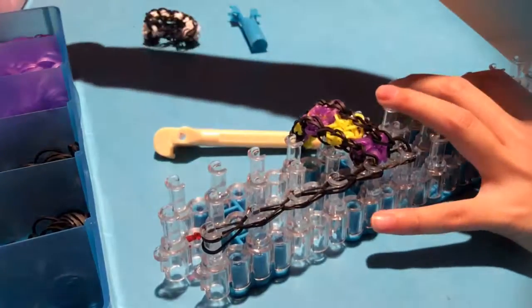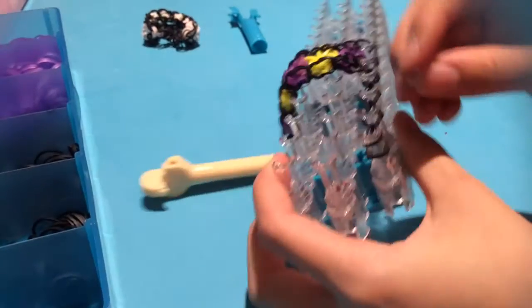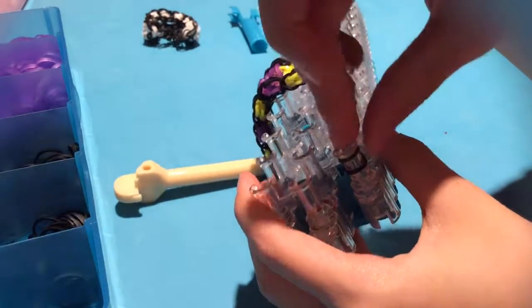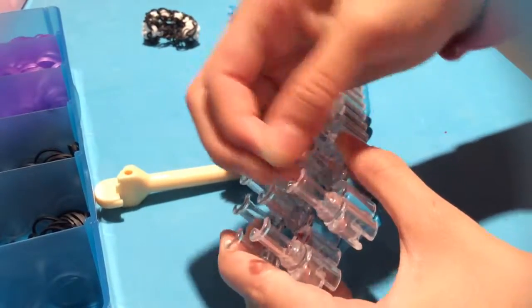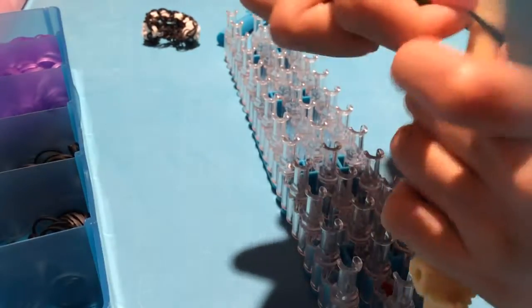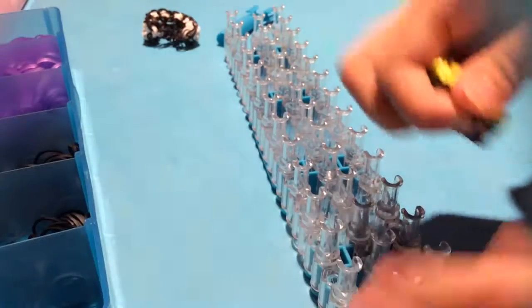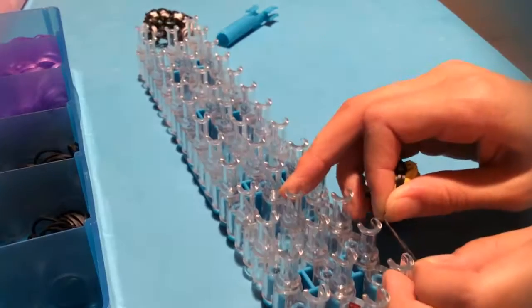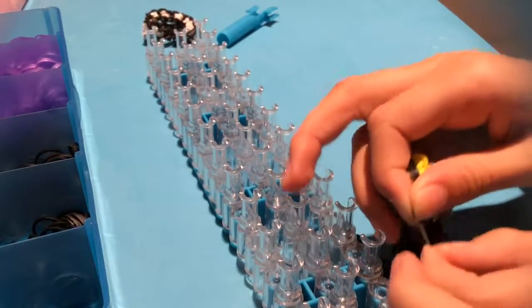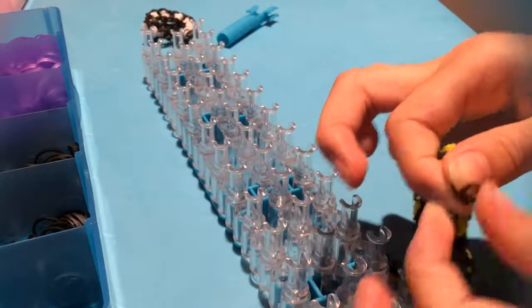Now you take a C-clip and then push it down on here. Make sure you got both bands. Take it off, take this part off, and put it on right here. Okay, this is it.